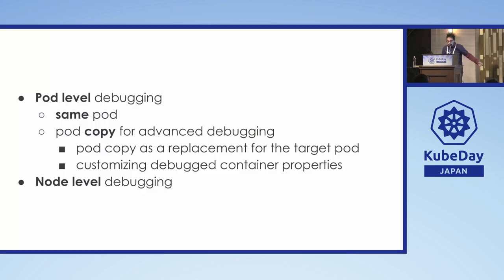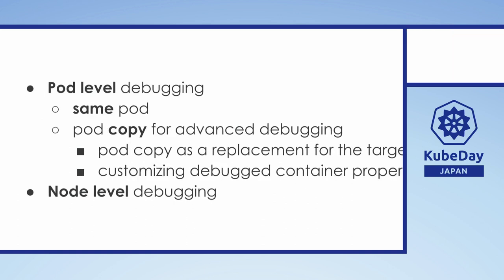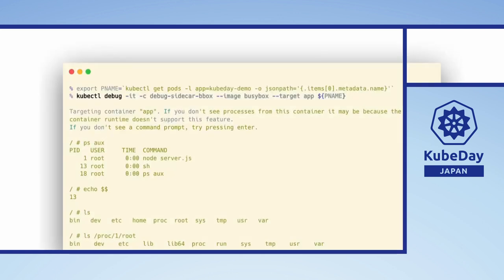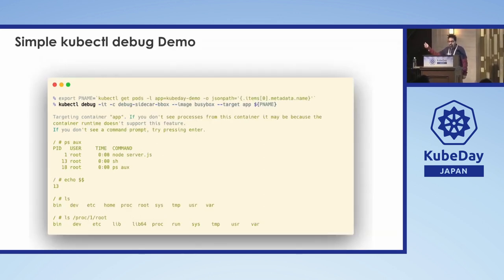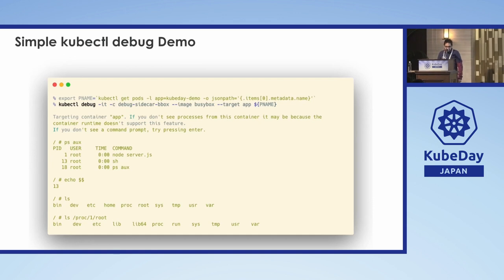This is pod-level debugging. For advanced debugging there's also a pod copy command — some use ephemeral containers and others don't, because you don't always need ephemeral containers. For example, with a pod copy you can use a regular container since you get to decide at that point. Here's another kubectl debug demo: creating a container named debug-sidecar with the busybox image and attaching to the target container 'app'.